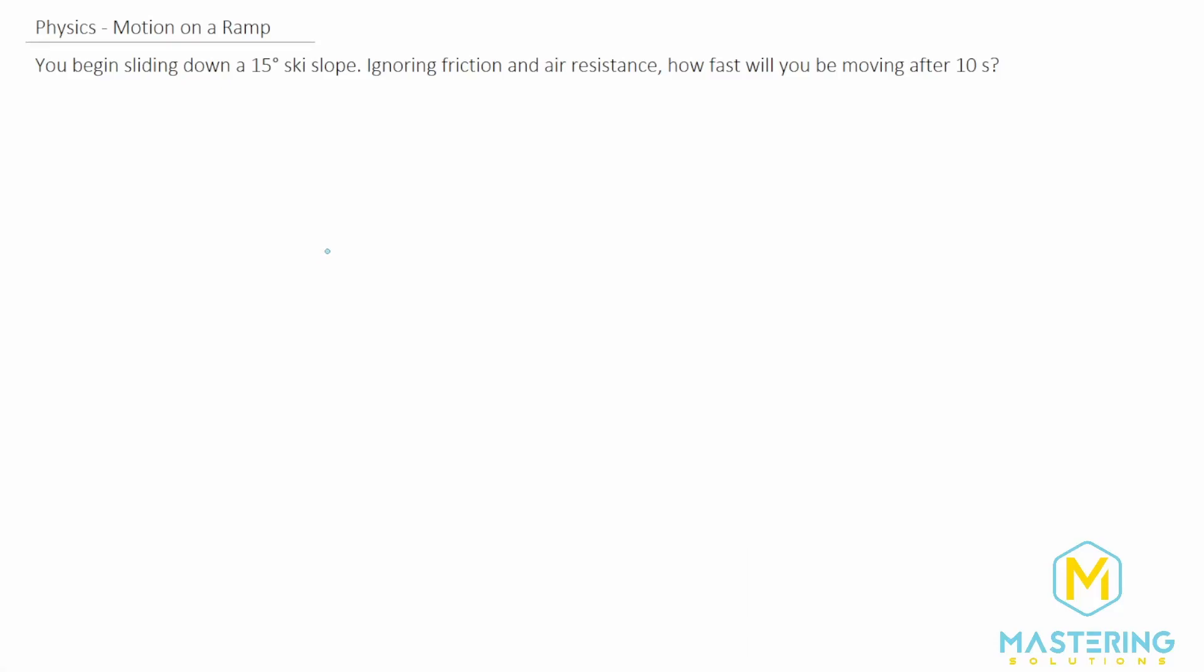Welcome to Mastering Solutions. This is a motion on a ramp problem and it tells us that we begin sliding down a 15 degree ski slope. Ignoring friction and air resistance, how fast will you be moving after 10 seconds?